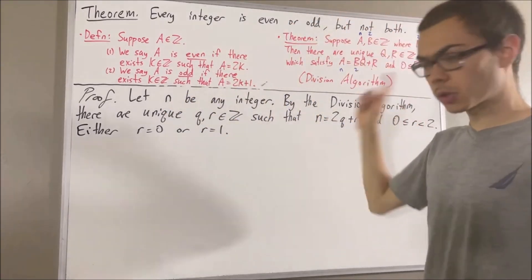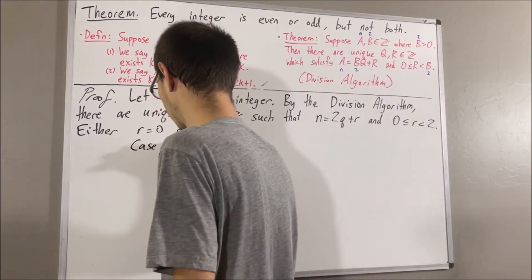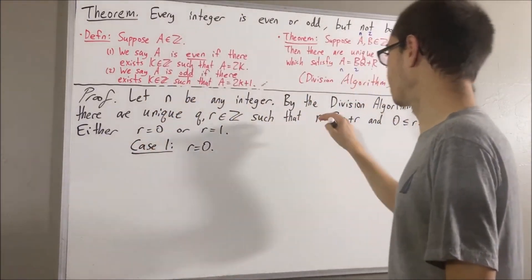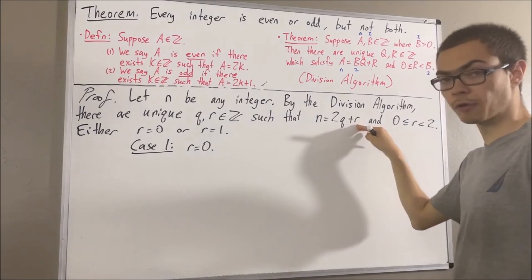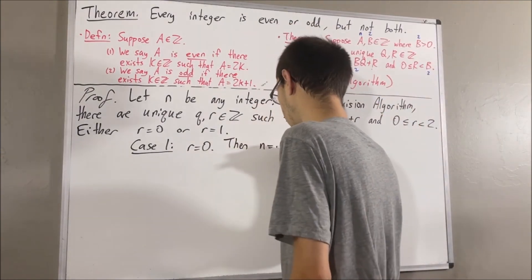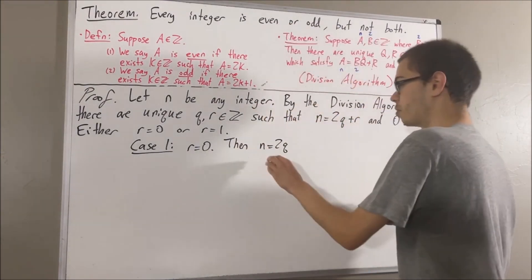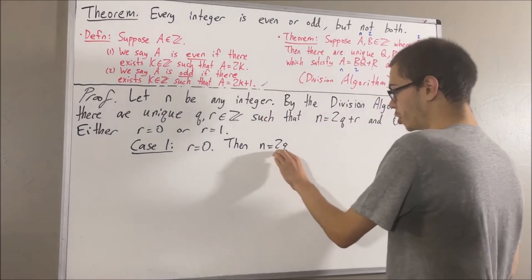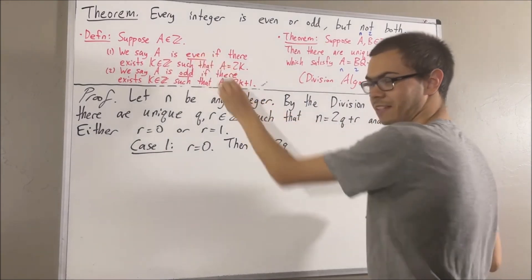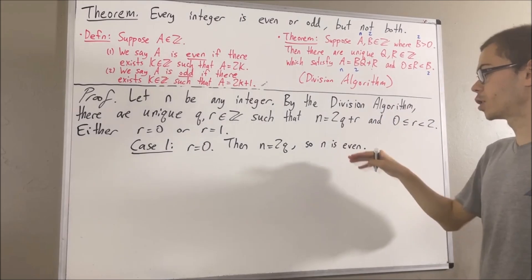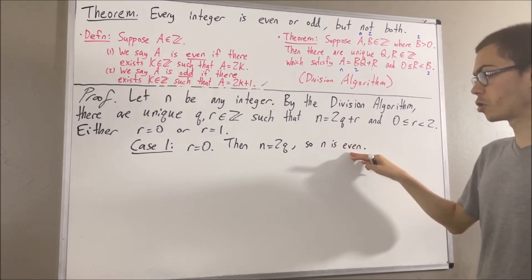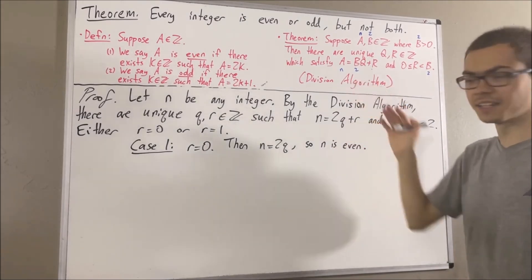Let's start with case 1, where r is equal to 0. Then n is equal to 2q plus 0, so n is equal to 2q. We see that n is equal to 2 times an integer, which tells us that n is even. So we've shown that n is even, and all that's left to show is that n is not odd.